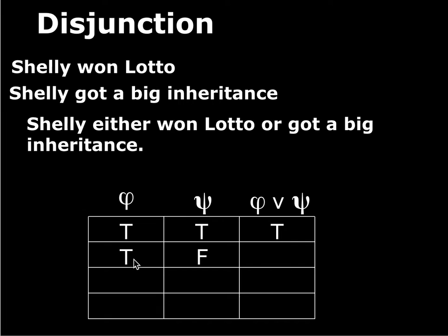If the first disjunct was true and the second was false, my guess was also right. She said she won lotto, but when I asked about the inheritance she said no. So only the first disjunct was true — you'd still say my guess was good. So the disjunction is still true. Ditto if the first disjunct is false and the second is true: she didn't win lotto, but she got a big inheritance — she inherited a million dollars.